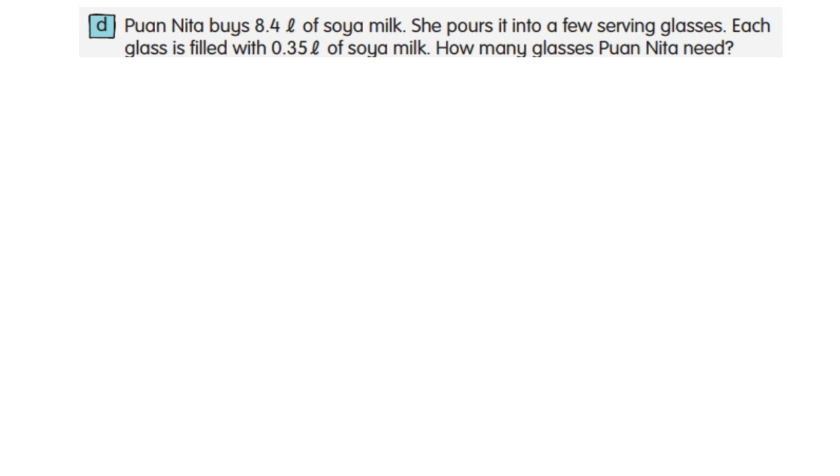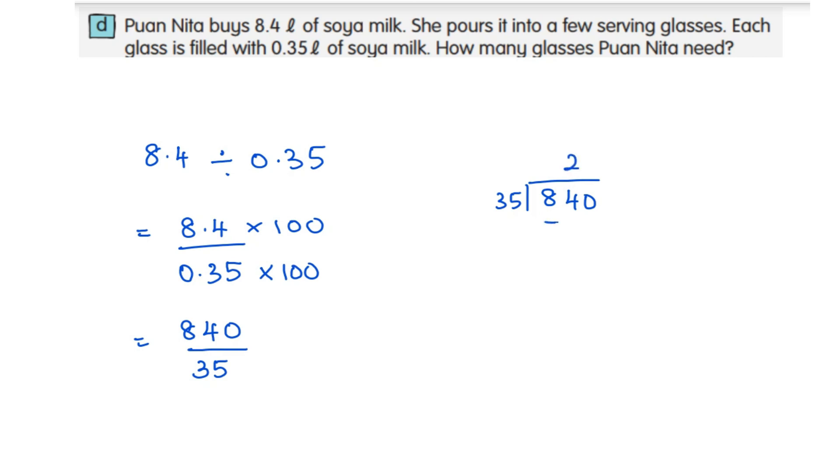8.4 liters of soy milk are poured into a few glasses, and each glass is filled with 0.35 liters. So 8.4 divided by 0.35. Multiply with 100 to eliminate the decimal.